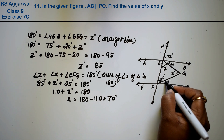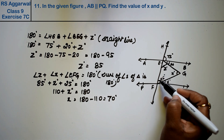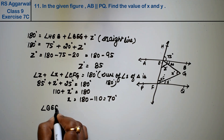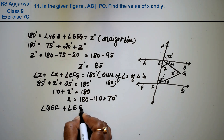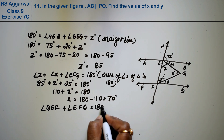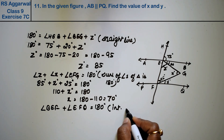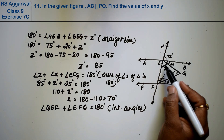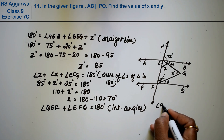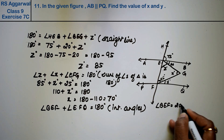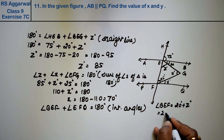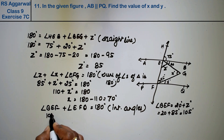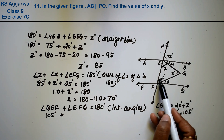Now how will we find the outer angle Y? We know that angle BEF plus angle EFQ equals 180 degrees. Why? Because they are co-interior angles (interior angles on the same side of the transversal), and the sum of co-interior angles is 180 degrees. So BEF equals 20 plus Z, that is 20 plus 85, which equals 105 degrees. So 105 plus angle EFQ equals 180.